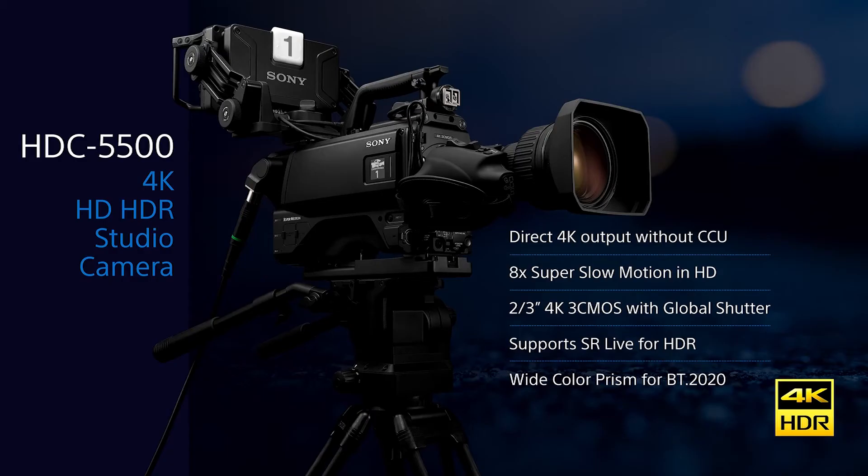New at the NAB Show is the HDC 5500 — the world's first 2/3-inch 4K global shutter 3CMOS system camera with direct 4K signal output capability in 12G SDI. It offers high sensitivity, low noise, wide dynamic range for HDR, and 8x HD super slow motion.